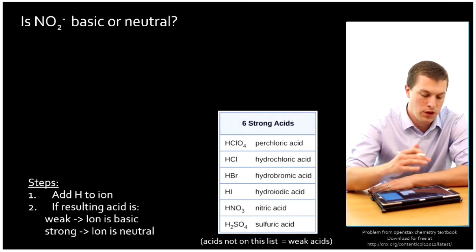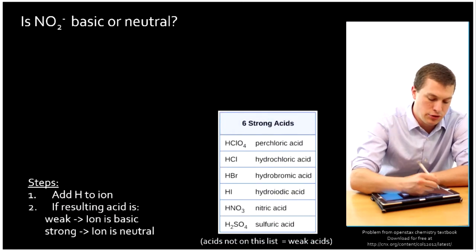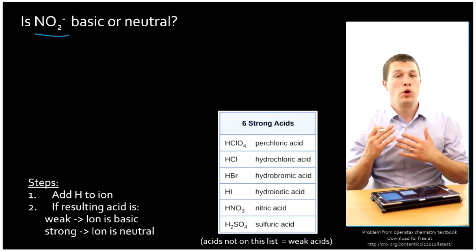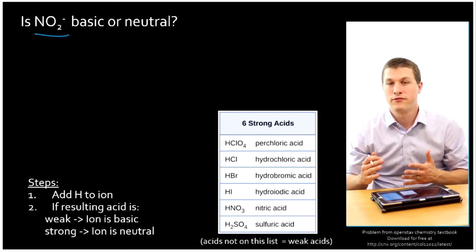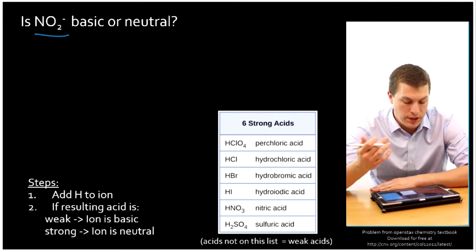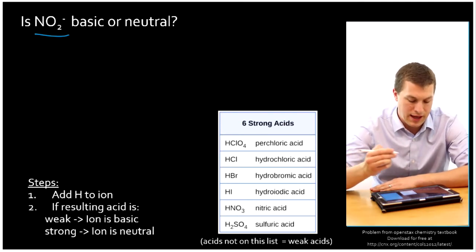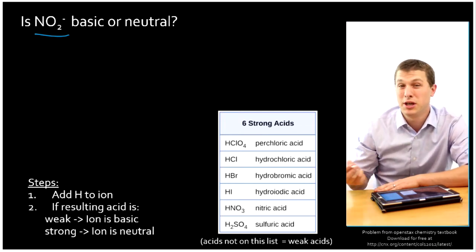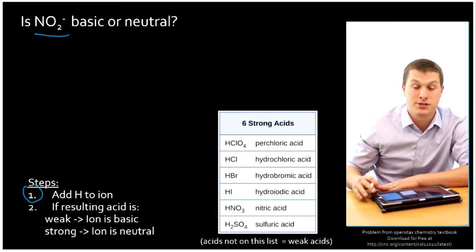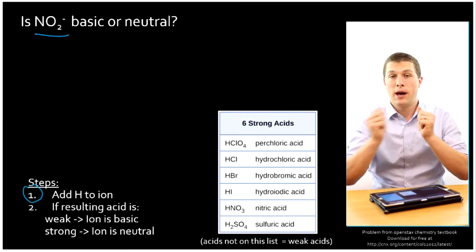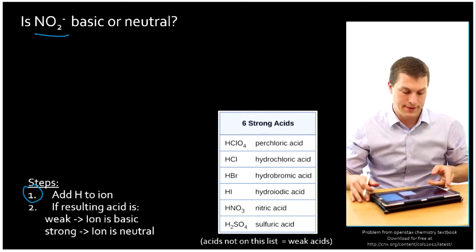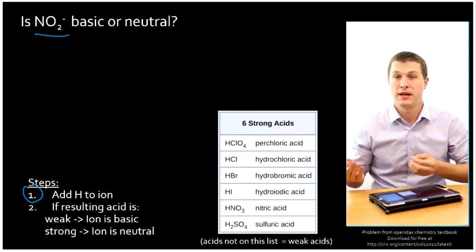Let's do a practice example. We look at an ion, say NO2 minus, and we want to know, is it basic or neutral? Remember, our anions will almost always be basic or neutral. There's only a few random weird cases where it's acidic. And almost always it will be basic or neutral. So how do we figure that out? All we do is we take this guy. That's the conjugate base of some acid, but we need to know what acid that is. So the first step then is to add an H to the ion. When an acid gives up its H, we get the original acid. So if we add that H back on, we'll get the original acid.